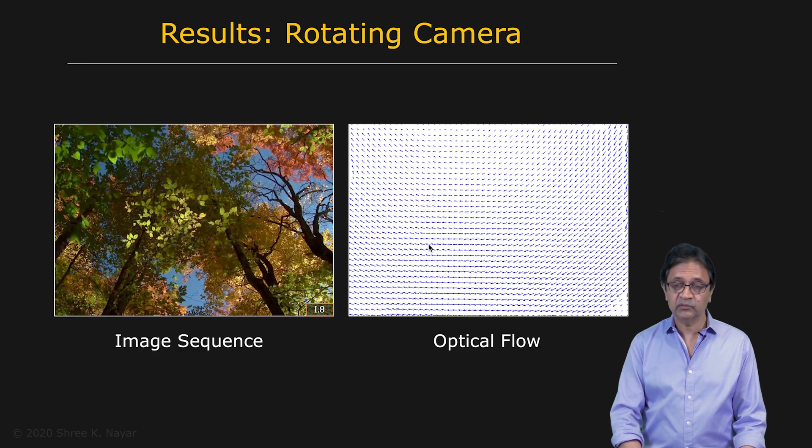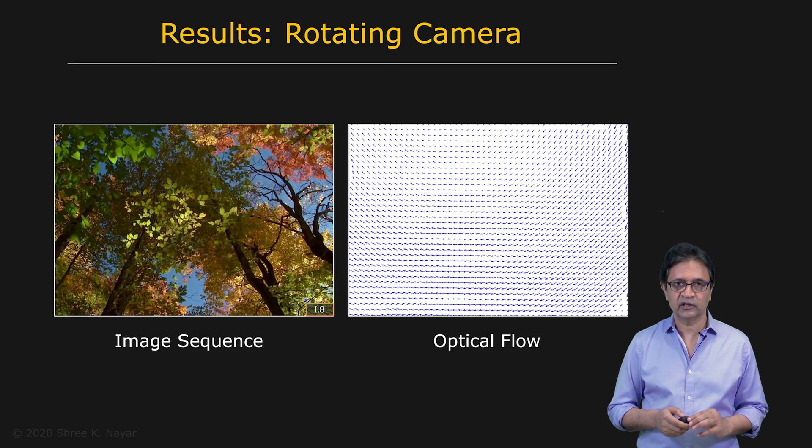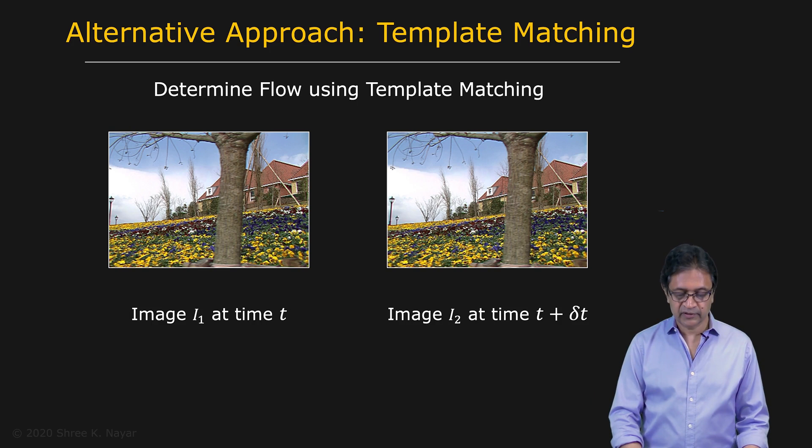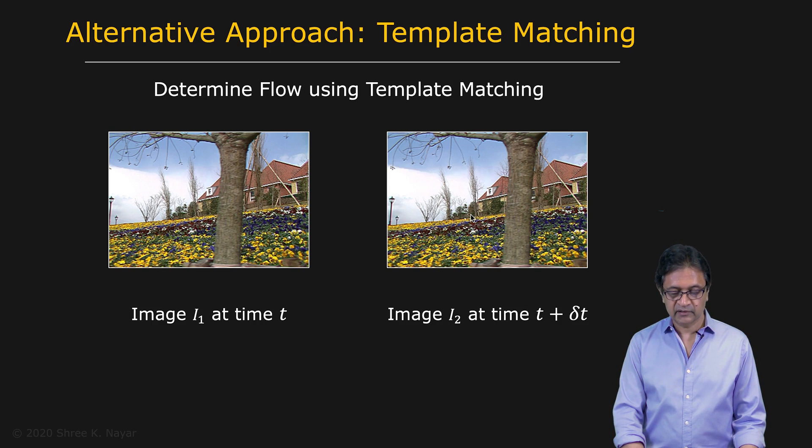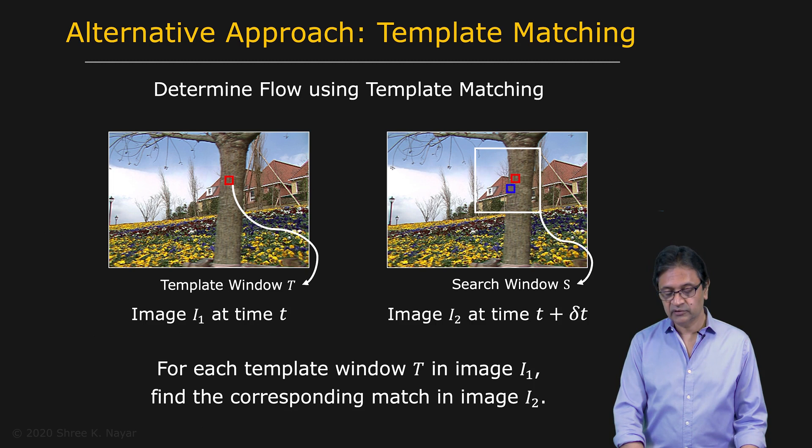Now, I should mention for the sake of completeness that there is another approach, more of a brute force approach that we can take to computing optical flow as well. And that's based on our good old idea of template matching. So let's say we're given this image time t, t plus delta t right here. And let's say that we want to find optical flow corresponding to this small window right here. Well, we can use that window as a template and go and search for the best match in the other image.